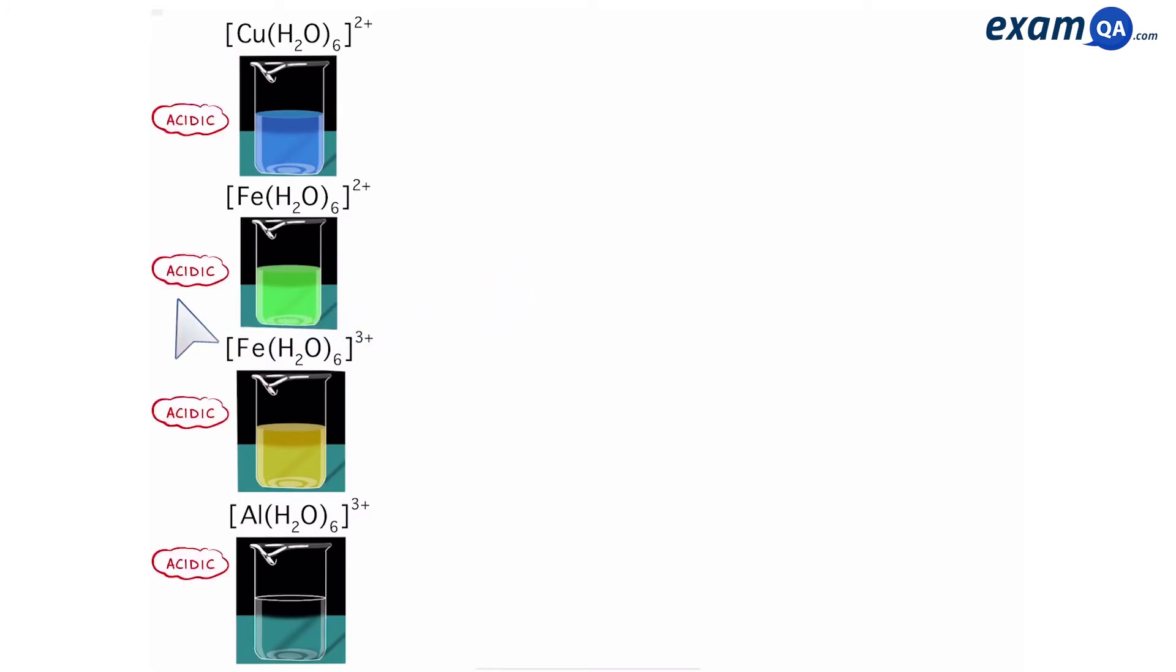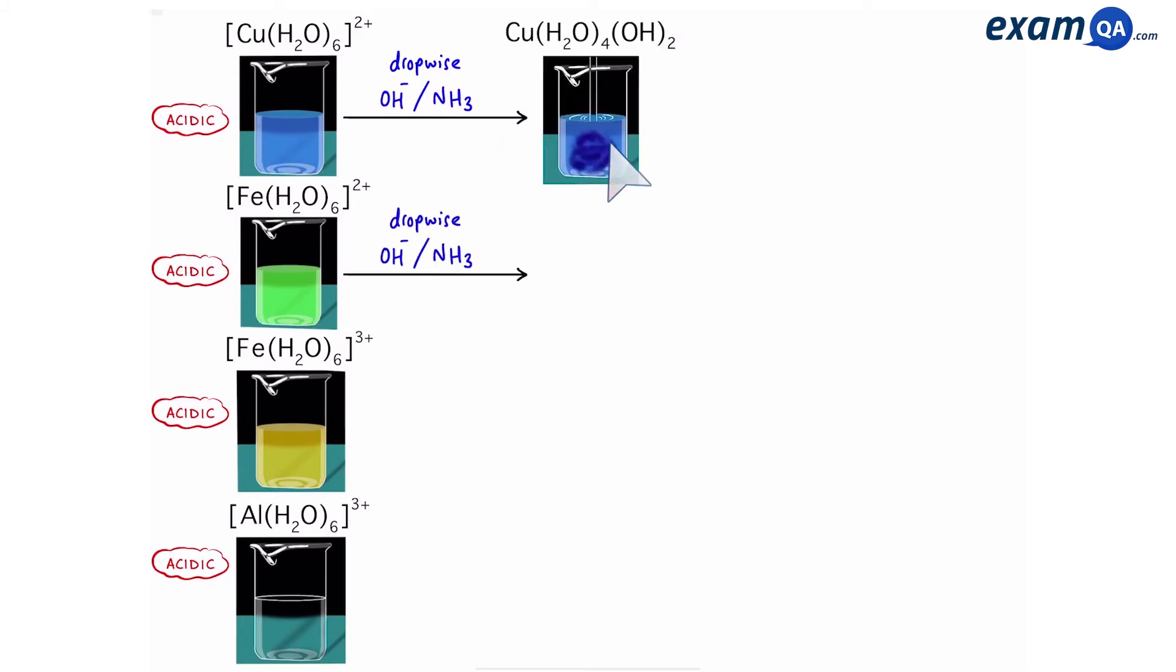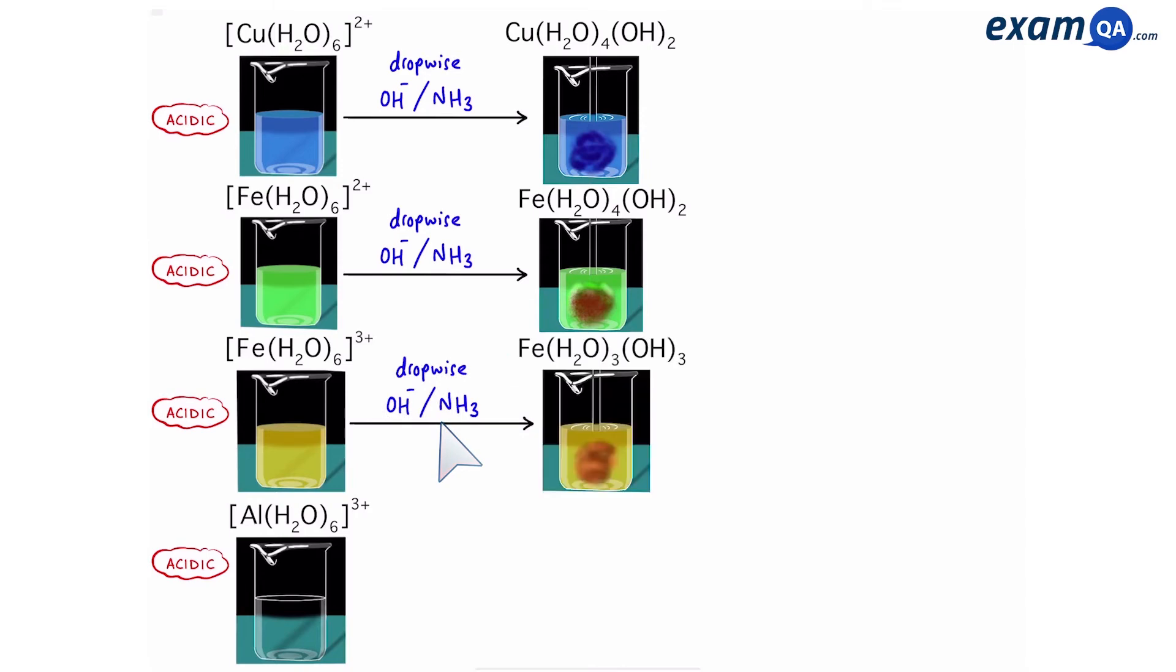Remember that they are all acidic, meaning that they will react with hydroxide and ammonia, which are bases. Adding hydroxide or ammonia dropwise to copper produces a blue precipitate. With iron 2+, it produces a green precipitate, which eventually goes brown. With ion 3+, it produces a brown precipitate. And with aluminium, it produces a white precipitate.